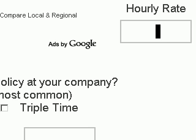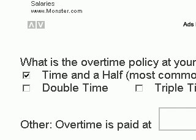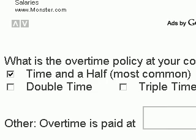For this example, we'll say our base hourly rate is $10 an hour. The next question is: what is the overtime pay policy at your company? You can select from three common options — time and a half, double time, or triple time. Time and a half is the most common and is selected as default in the calculator. If your overtime policy is different, you can uncheck that box and check a different one. For this example, we'll go ahead and leave this box checked.